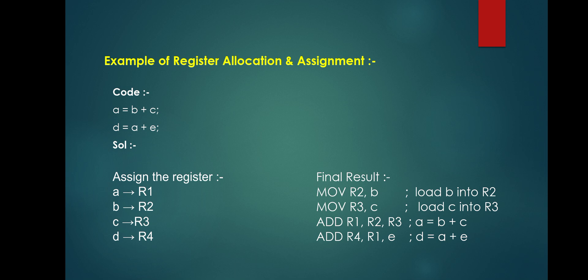Consider the example: a = b + c and d = a + e, where variables a, b, c, d, e are present. Which variables are selected for registers? Variables a, b, c, d are allocated to registers, while e remains in memory. For register assignment: a is assigned to r1, b to r2, c to r3, and d to r4.